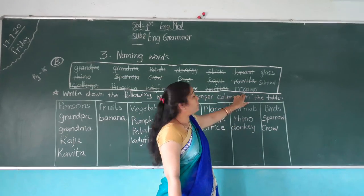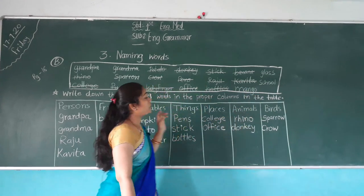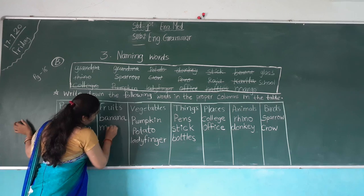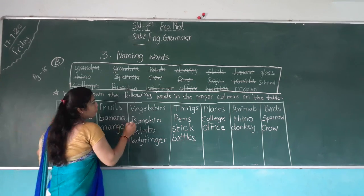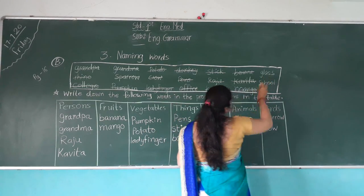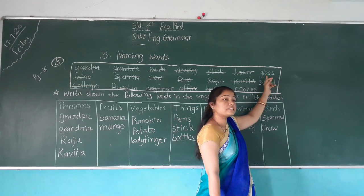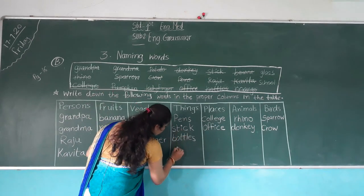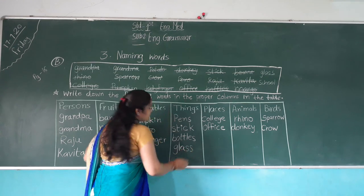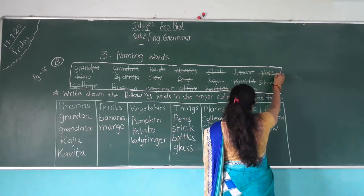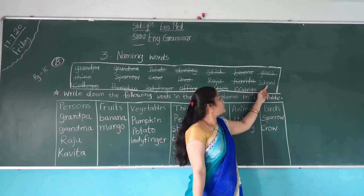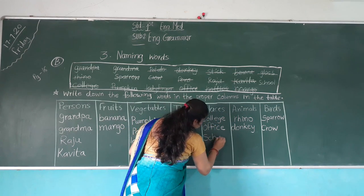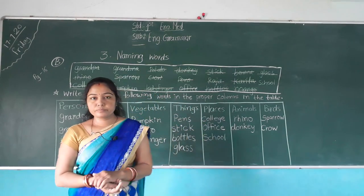Read this spelling — M-A-N-G-O — Mango. Mango is the name of a fruit, so where do we write it? In the fruit column — M-A-N-G-O. Cut from here. Next — G-L-A-S-S — Glass. Glass is the name of a thing, so write it in the things column. At the last, S-C-H-O-O-L — School. School — where do we write it? In the places column — S-C-H-O-O-L. School.